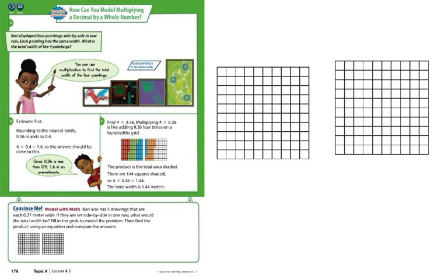So each painting is 0.36 meters wide. Okay. You want to round to the nearest tenth. So 0.36, if you look right there, we'll round up to four. Okay. So four times 0.04 equals 1.6. So the answer should be close to this. This is kind of what we were working on yesterday. But using your hundreds grids, we're going to find the exact answer. Okay.